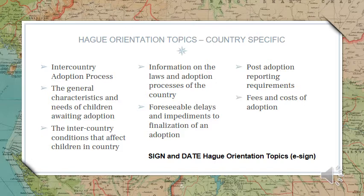The most current laws in the adoption process from Taiwan can be found on the Taiwan Central Adoption Authority site called the Social and Family Administration Ministry of Health and Welfare. Eligibility requirements can also be found on the U.S. Department of State website. The eligibility requirements change from time to time and Nightlight remains updated at all times. This is one of the reasons our application form asks so many questions — we want to ensure that you are eligible to adopt from the program you desire.